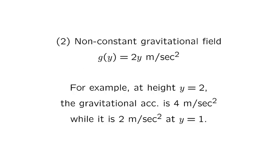The second field is a non-constant gravitational field. It is given by g(y) = 2y meters per second squared. For example, at height 2 meters, the gravitational acceleration is 2 times 2, so it is 4 meters per second squared. When the height is 1 meter, the acceleration is 2 times 1, so it is 2 meters per second squared.